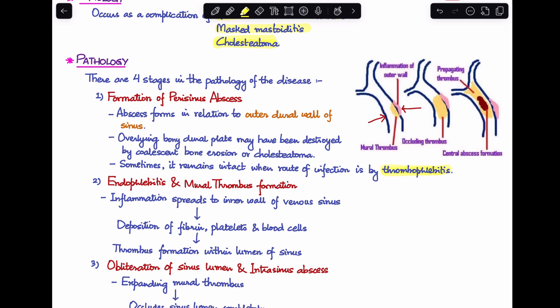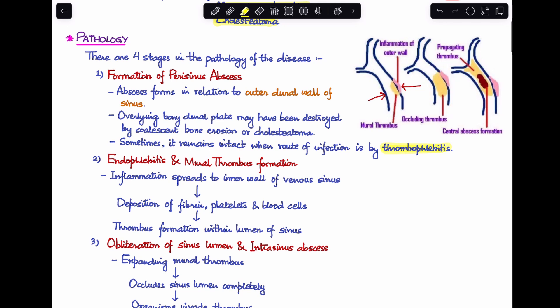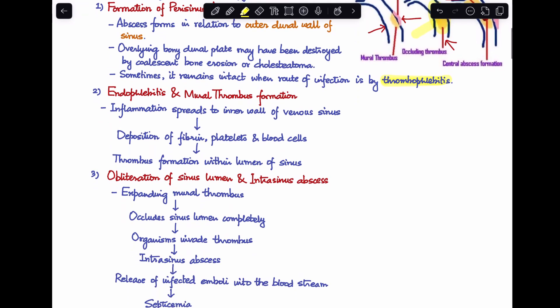The second stage is endophlebitis and mural thrombus formation. The inflammation spreads to involve the inner wall of the venous sinus. There is a deposition of fibrin, platelets, and blood cells, which ultimately leads to the formation of a thrombus inside the sinus — the intrasinus thrombus.